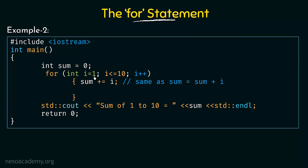Initially the value of i is 1. It checks the condition: is 1 less than or equal to 10? Yes, true. So sum = sum + i: initial sum is 0, plus i which is 1, gives sum equal to 1. Then i is incremented by 1, so i becomes 2. Again the condition is checked: 2 is less than or equal to 10, true. So sum = 1 + 2 = 3. Then i is incremented again and the condition is checked. This continues till the condition becomes false.